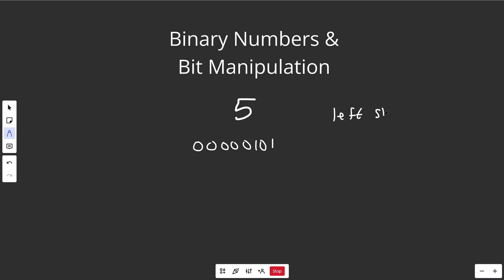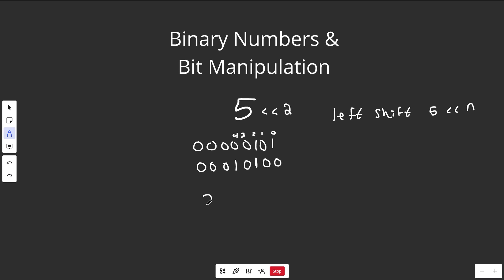Now let's show a left shift. A left shift means we take a number like 5 and left shift it by some number of positions n. Let's do 5 left shift by 2. That means we shift the bits left by 2 positions: the 1 from the 2-to-the-2 position moves left to become 2 to the 4, and the 1 from 2 to the 0 moves left to 2 to the 2. The two empty spaces on the right are padded with 0s. The result is 2 to the 4 plus 2 to the 2, which is 16 plus 4, equal to 20. So 5 left shifted by 2 is equal to 20.